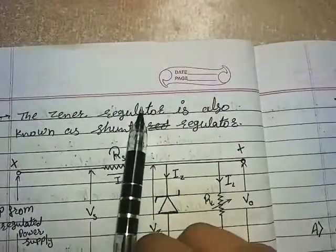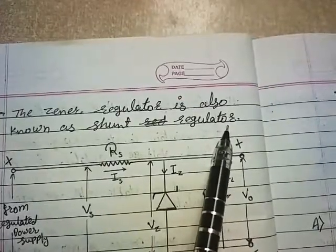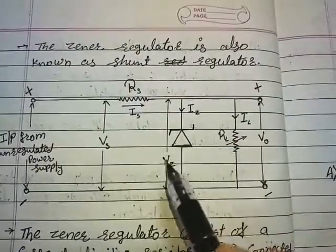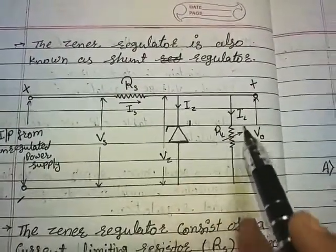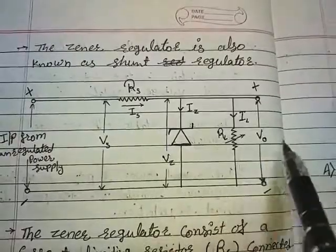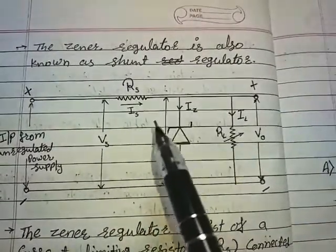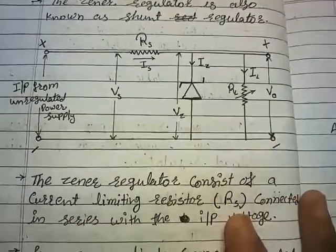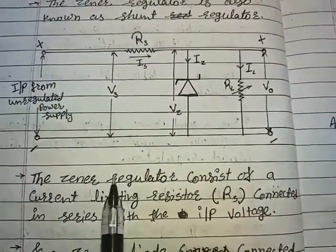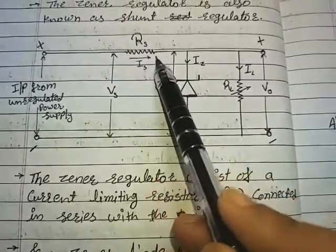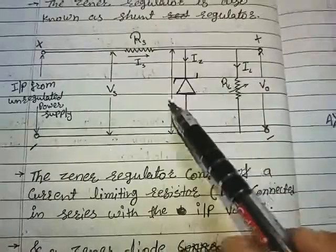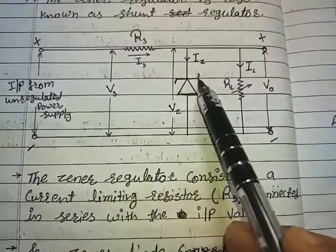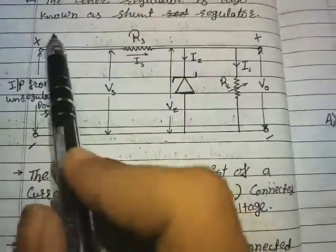The zener regulator is also known as a shunt regulator. Shunt means parallel, and here the zener diode is connected in parallel with the load resistor. Hence this voltage regulator using a zener diode is called a shunt regulator. The zener regulator consists of a current limiting resistor RS and a zener diode connected in reverse bias — the N-end of the diode is connected to positive.